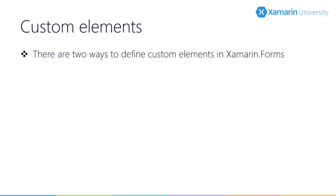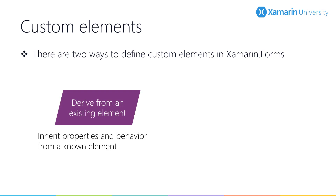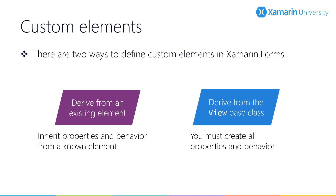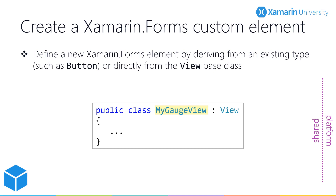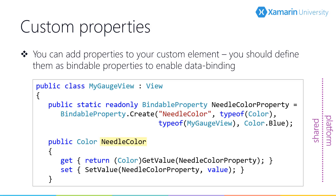Deriving from View is more of a blank slate approach where you define all of the properties and events for your control. This is actually the preferred approach for custom controls that don't mirror any of the provided Xamarin Forms elements. Just like before, we start by defining a new element in our shared code. Since our gauge example doesn't fit into any existing elements, we'll derive from View. Here we can define custom properties, and it's recommended to use bindable properties, which allows us to respond to property changes from within the renderer and keep the element and native control in sync.